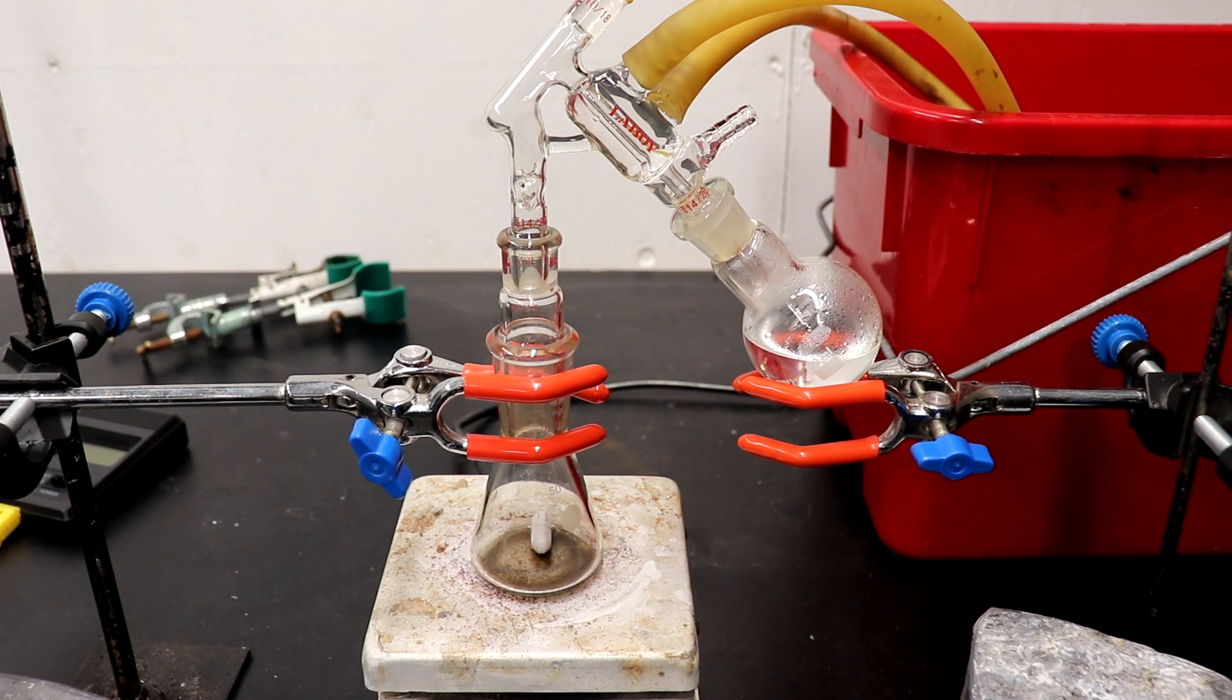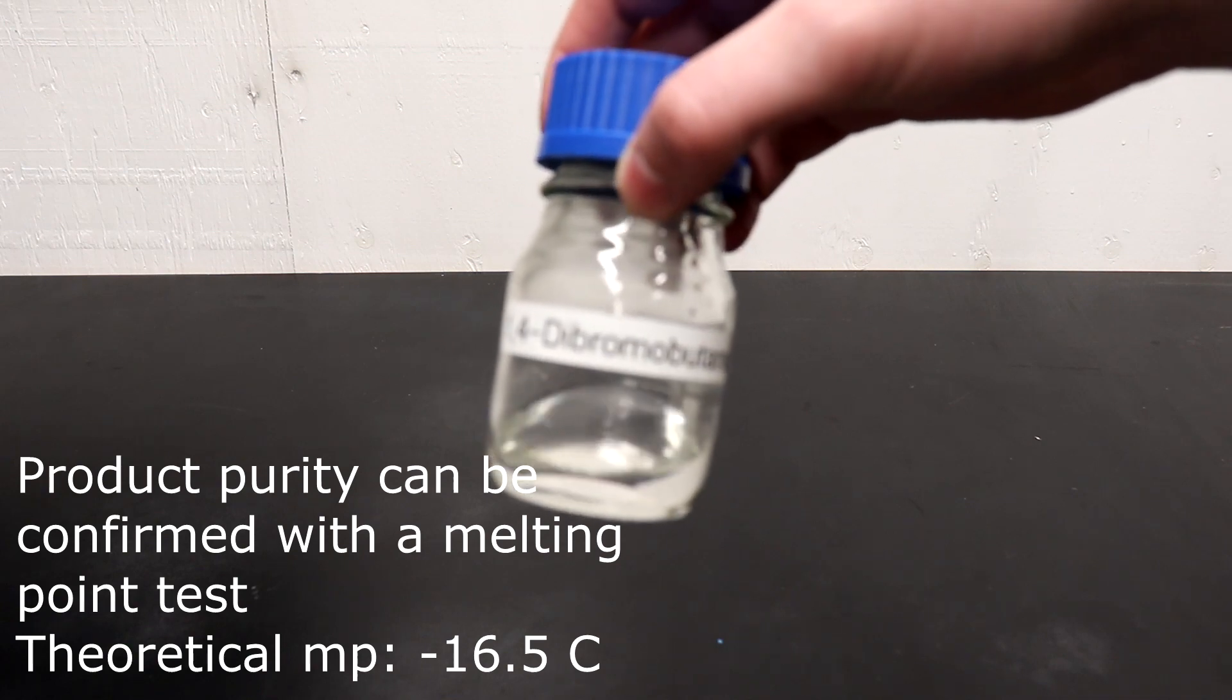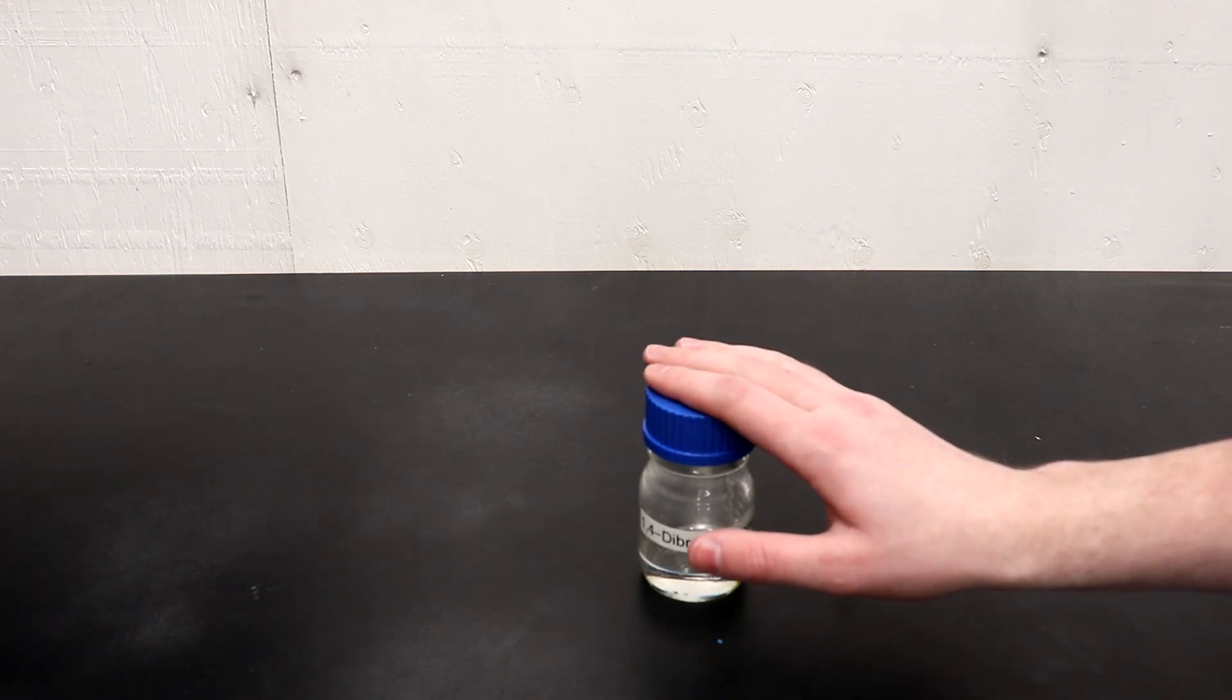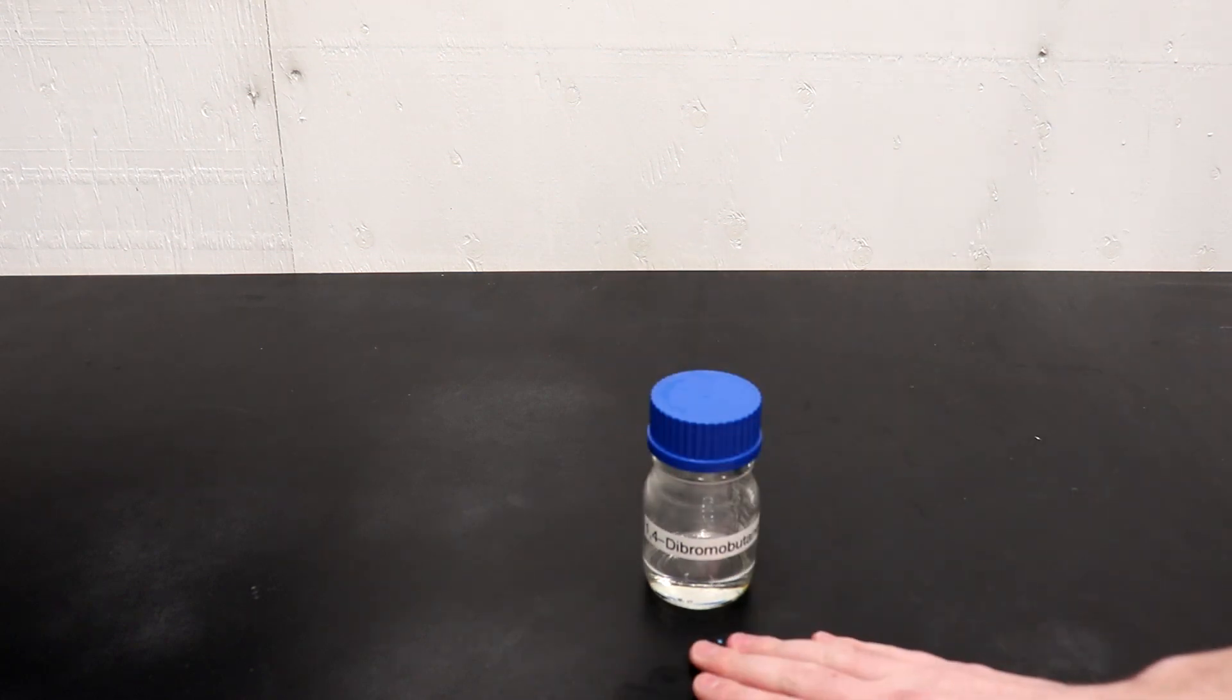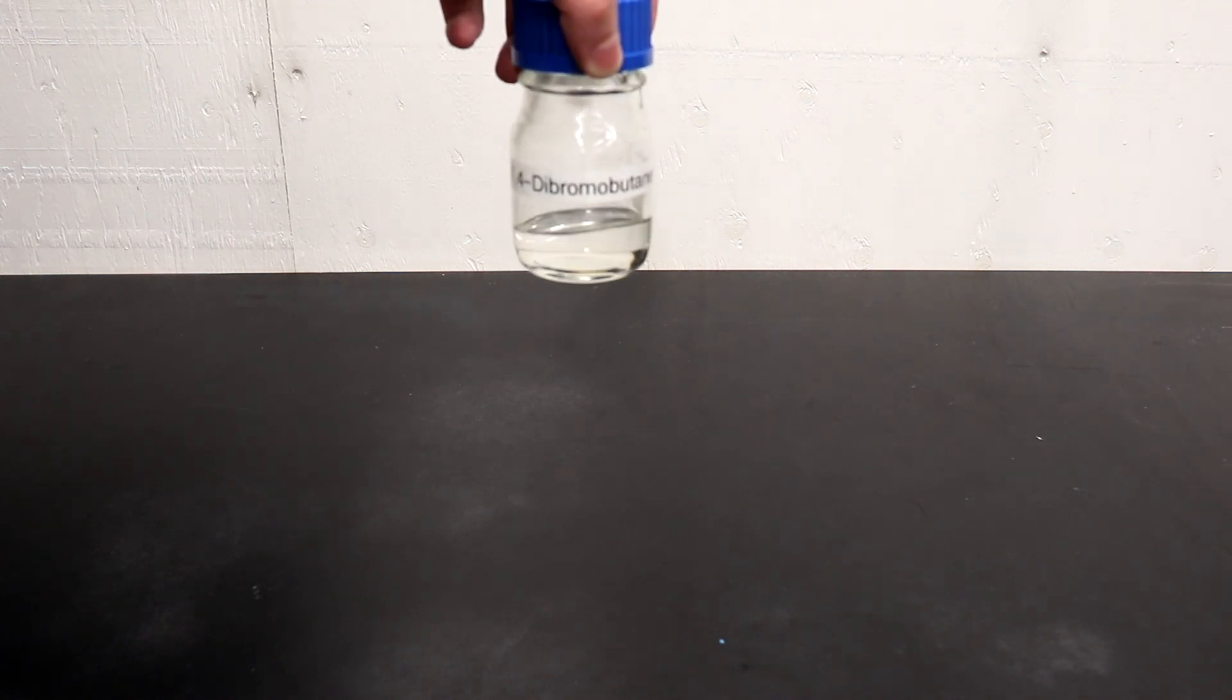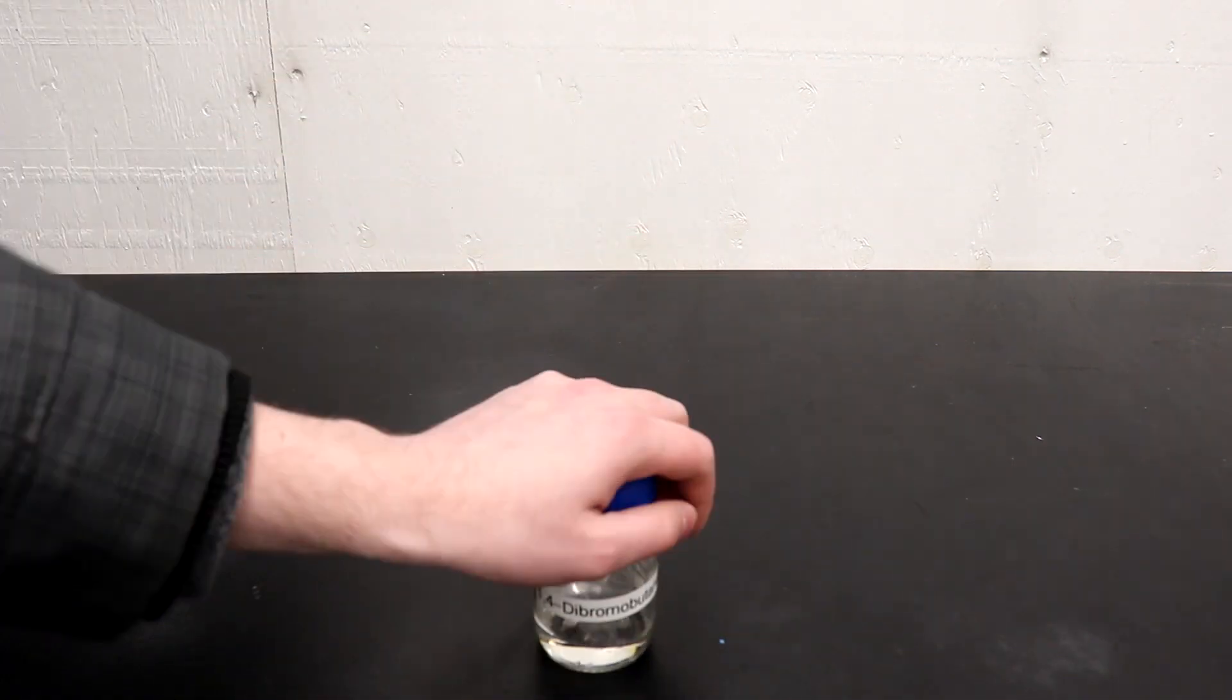The distillation has been completed, and the final yield is 41.2 grams of the 1,4-dibromobutane, and that correlates to a 76% yield, which is actually 2% better than the yield in Vogel. The theory behind why I got a better yield is because I refluxed for an hour longer, for 2%. Pretty good. All around, happy with the synthesis. So now we can move on in the future to making some cyclobutane. Thanks for watching, everyone. I'll see you in the next one.